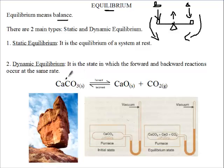So the rate of calcium carbonate decomposing to form calcium oxide and carbon dioxide is the same as the rate of carbon dioxide combining with calcium oxide to form calcium carbonate. So calcium carbonate will break down to form calcium oxide and carbon dioxide. Carbon dioxide will also combine with calcium oxide to form calcium carbonate.